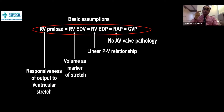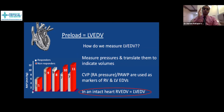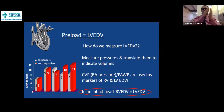This is the major limitation of CVP: it doesn't clearly tell us about left ventricular end-diastolic volume. Preload, what we are interested in, is left ventricular end-diastolic volume. But we are assuming right atrial pressure equals right ventricular end-diastolic pressure, equals pulmonary artery occlusion pressure, equals pulmonary capillary wedge pressure, equals left atrial pressure, equals left ventricular end-diastolic pressure, equals left ventricular end-diastolic volume. We are assuming left equals right, and volume equals pressure.